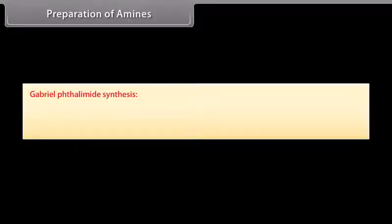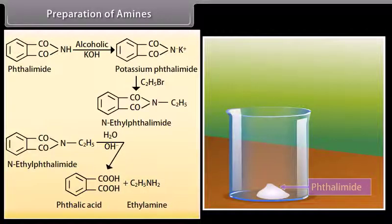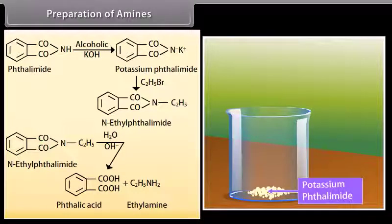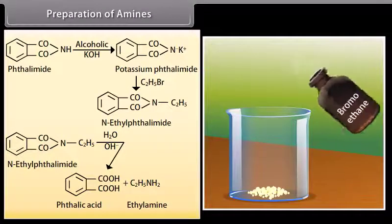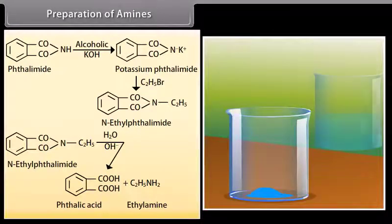Gabriel phthalimide synthesis: In this process, phthalimide is reacted with alcoholic KOH to get potassium phthalimide, which reacts with an alkyl halide to form N-alkyl phthalimide. On basic hydrolysis, this gives a primary amine and phthalic acid. For example, phthalimide reacts with bromoethane to form N-ethyl phthalimide, which on basic hydrolysis gives ethylamine and phthalic acid.